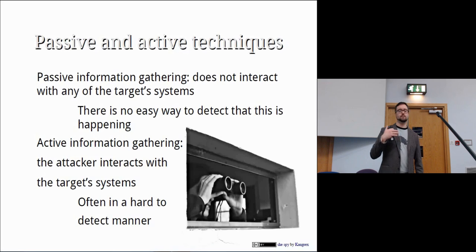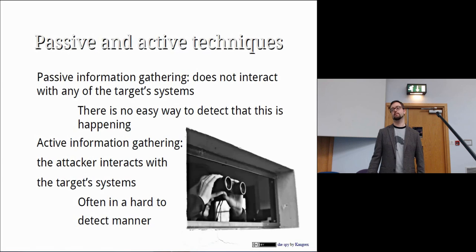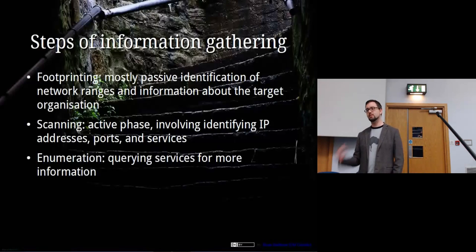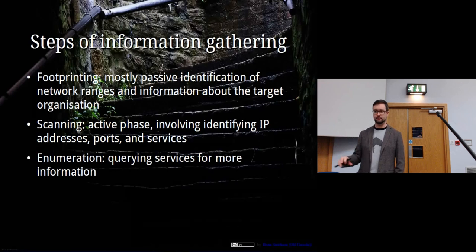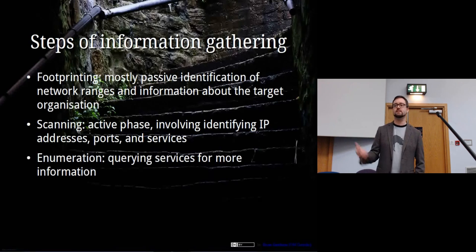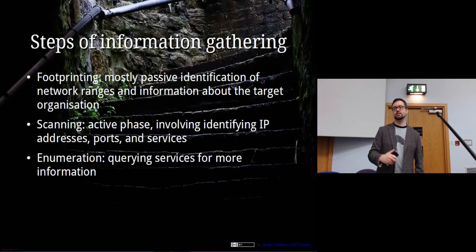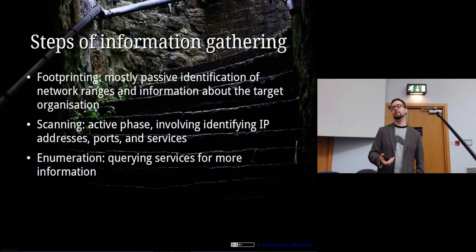With active information gathering, they can — if they care — see that something's happening. You start interacting with their computers, making requests, trying to figure out as much as you can. You can break down information gathering into three steps broadly: footprinting, which is mostly passive, finding things like network ranges, and may include open source intelligence.